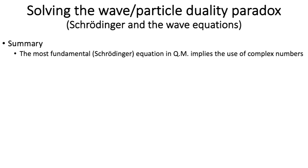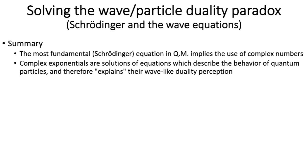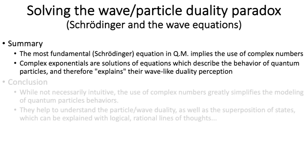So, to summarize, the most fundamental equation in quantum physics implies the use of complex numbers. Complex exponentials are a solution of equations which describe the behavior of particles, and therefore also, as we just saw, explained their wave-like so-called duality perception. And so that means that, okay, they are not necessarily intuitive, but the use of complex numbers really simplifies the modeling of quantum particles' behaviors. And last but not least, they help us understand the so-called wave-particle duality and the superposition of states in a logical way. And this is great, because I hate when things are not logical. Don't you?